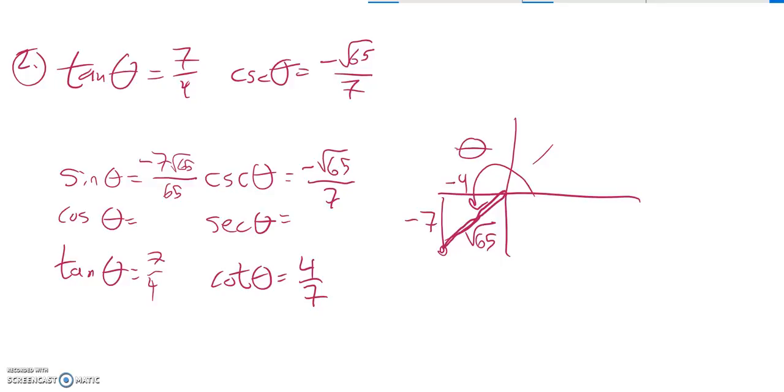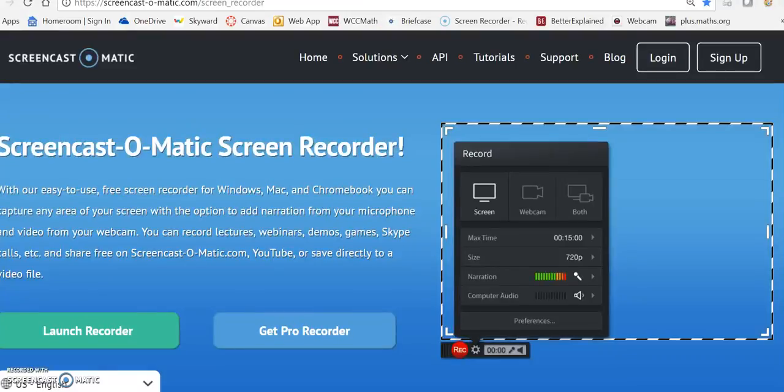And since tangent's positive, they have to both be negative. So then I can just see my other pieces right away. Cosecant would be negative 4 over root 65. Rationalize that denominator. It becomes this. And secant would be that flipped over, which would be negative root 65 over 4.